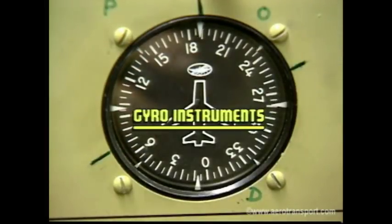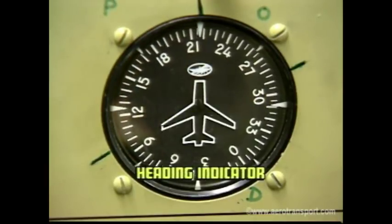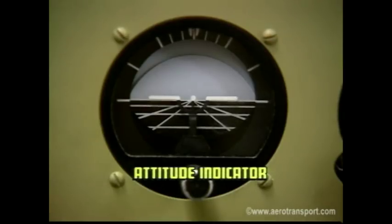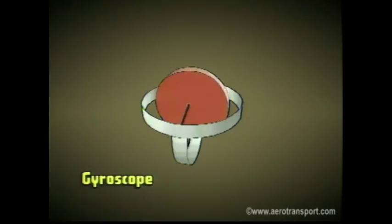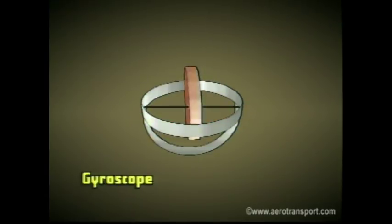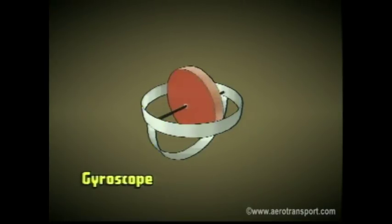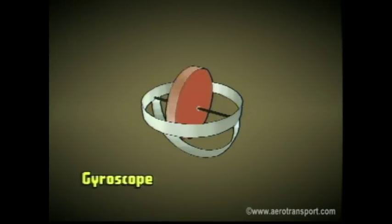Now, a look at the gyro instruments. The three gyro instruments we will discuss are the heading indicator, the attitude indicator, and the turn and bank indicator. To understand how these instruments work, you must understand the gyroscope. A gyroscope is a spinning wheel which rotates at a very high speed. It is mounted in a gimbal to allow its axle to be pointed in any direction. The gyroscope has two characteristics employed in aircraft instruments: gyroscopic inertia and precession.